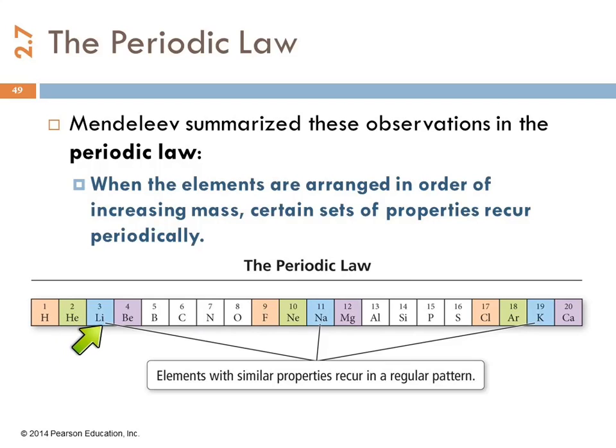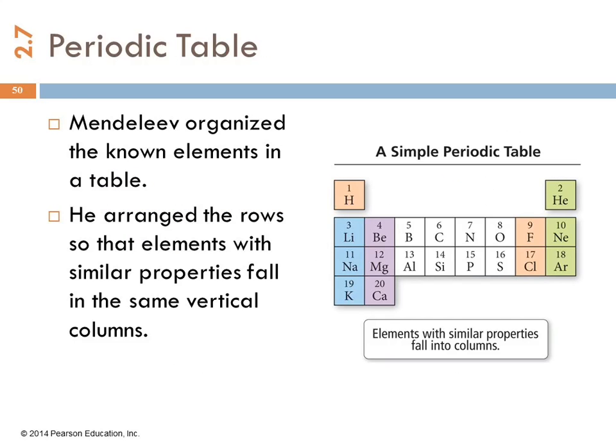So here, if we look at these blue ones, lithium, sodium, potassium have similar properties. And I imagine him taking like index cards and writing stuff down, let's try to make some sense out of this. But what he did is he took the elements that were known at that time and arranged them into a table. And he arranged the rows so that the elements with similar properties fall in the same vertical columns. So he took that long strip and arranged it so that lithium, sodium, and potassium were in the same column. And beryllium and magnesium and calcium had similar properties and they're in the same column. And it worked out beautifully with all these patterns. So this is a simple portion of a periodic table.